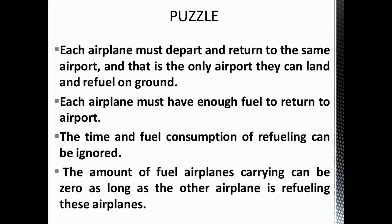There are some conditions to be noted. Ignore any extra fuel consumption as a result of acceleration or evaporation of fuel. Each airplane must return and depart from the same airport — that is the only airport they can land and refuel on the ground. Each airplane must have sufficient fuel to return to the airport. Assume that refueling is an extremely fast process, and the amount of fuel the planes can carry will be zero as long as the other airplane is refueling these planes. So, can you guess what is the minimum number of planes required?